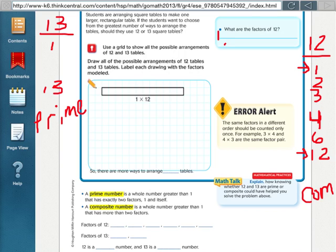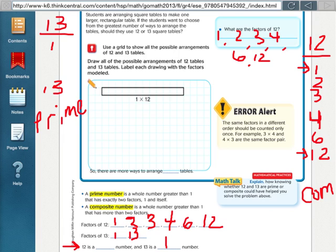The factors of 12 are 1, 2, 3, 4, 6, and 12. And the factors of 13 were just 1 and 13. So 12 is a composite number, 13 is a prime number. So we can easily see once we list out the factors of these two numbers that the students should choose the 12 because there's many more factors in 12. There are more ways to arrange those 12 tables.